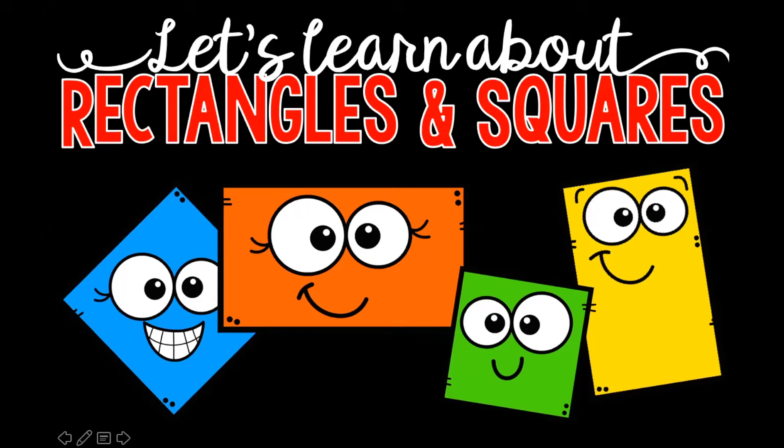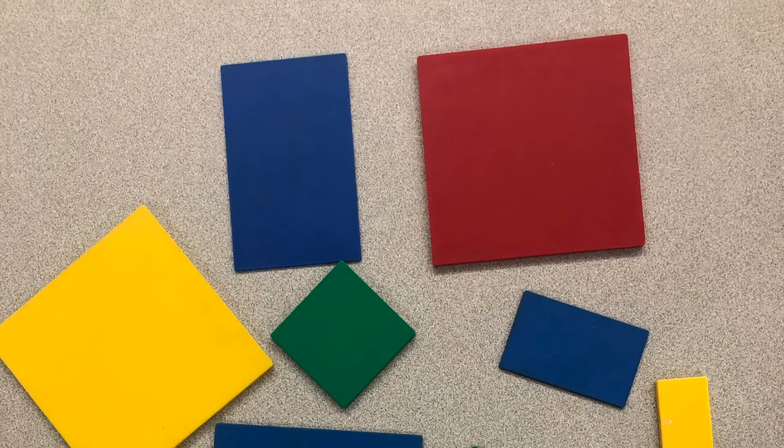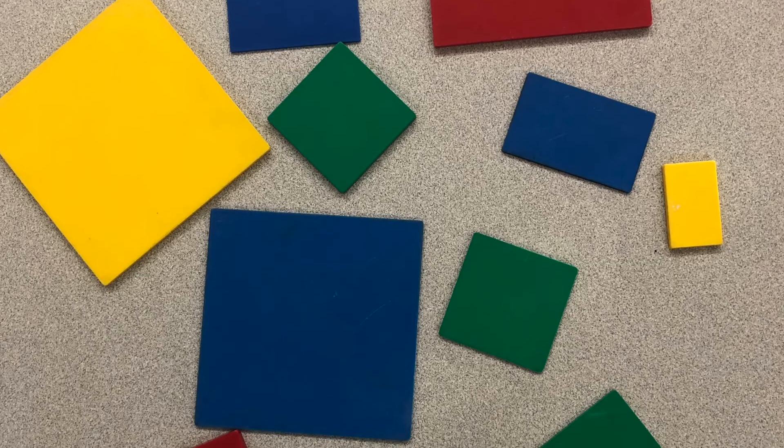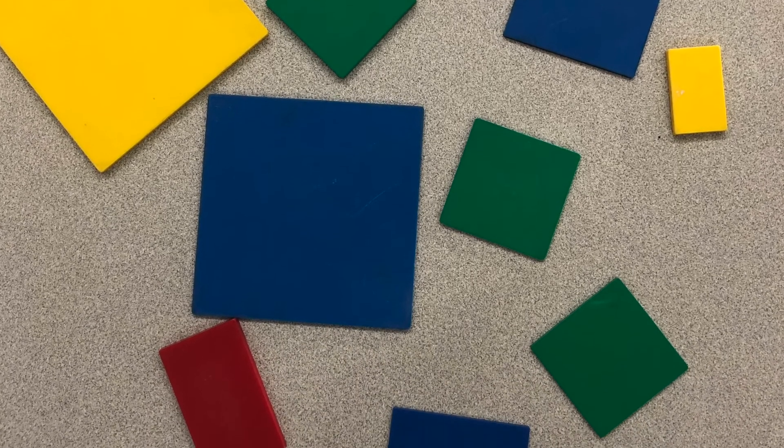Let's learn about rectangles and squares. Let's look at some shapes. We see rectangles and squares everywhere, but what makes them a rectangle and a square?